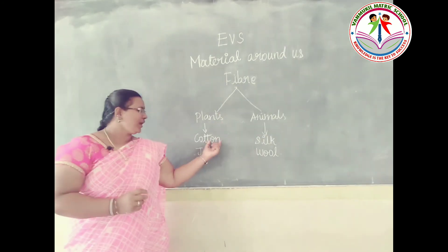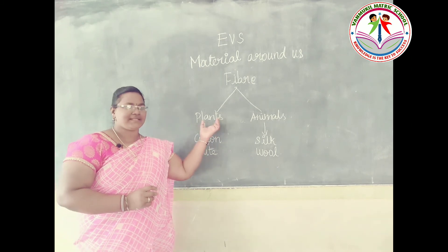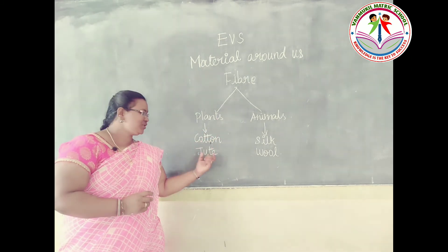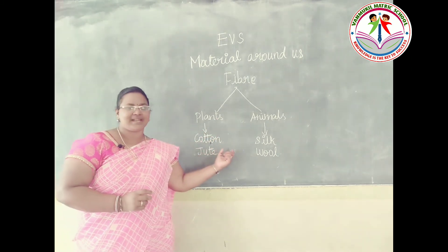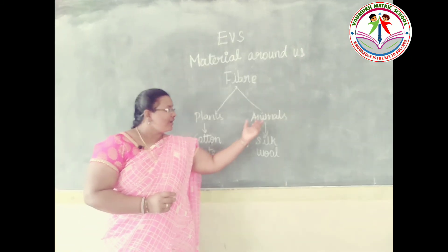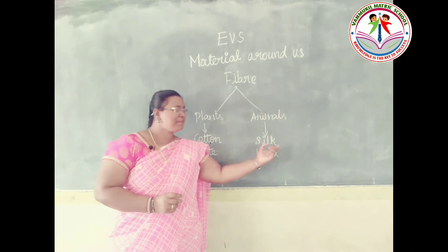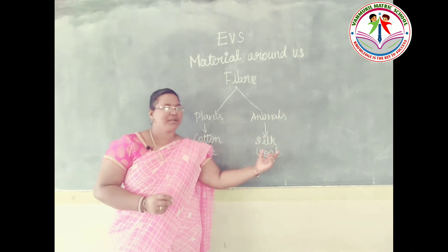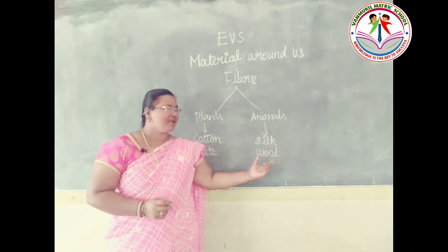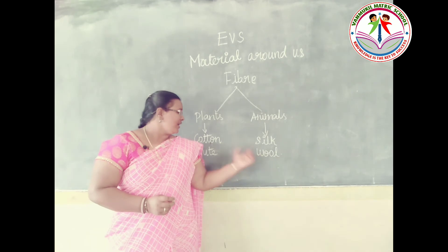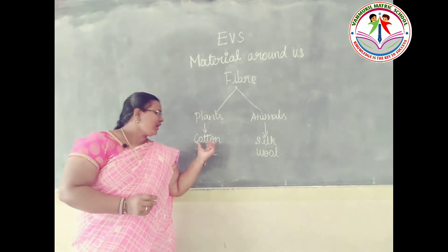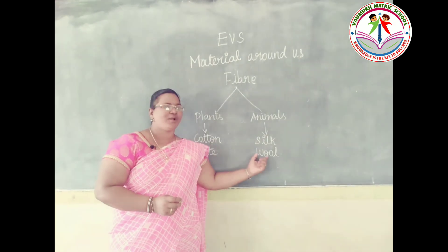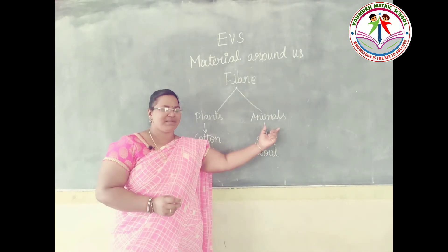Cotton and jute are obtained from plants. Cotton is one part, jute is another. Silk and wool are obtained from animals. Cotton and jute come from plants; silk and wool come from animals.